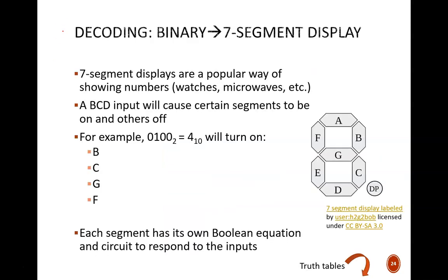One other commonly needed decoder is one that converts a binary input into a seven segment display. You have likely seen these displays on digital watches or microwave ovens. They allow for visual communication of a decimal digit.